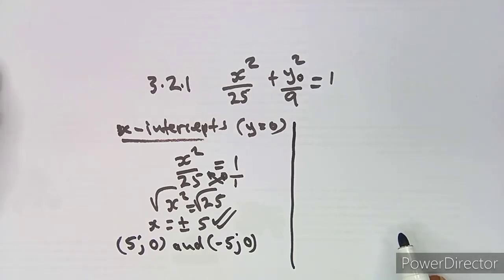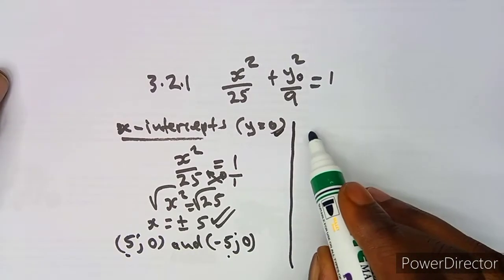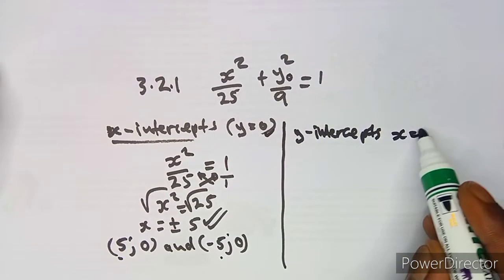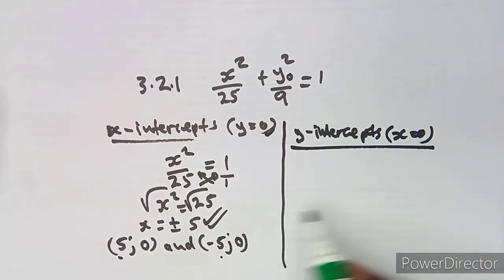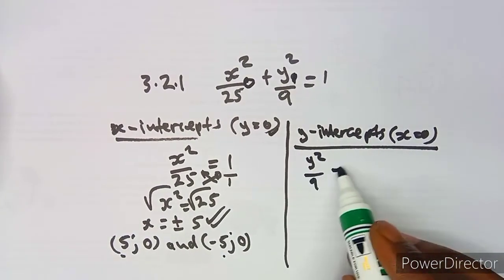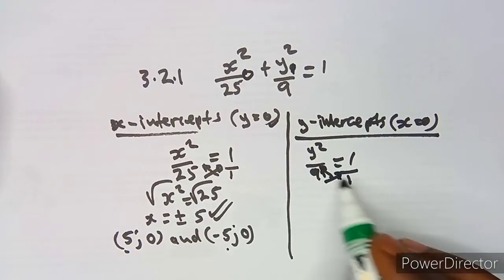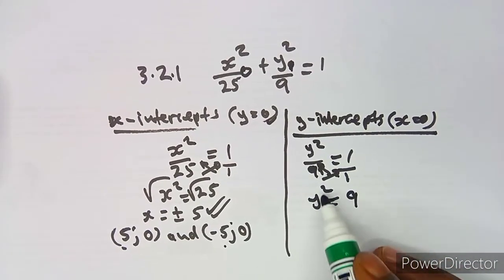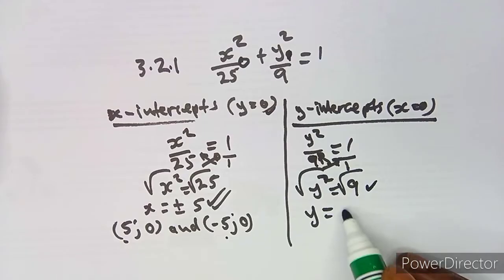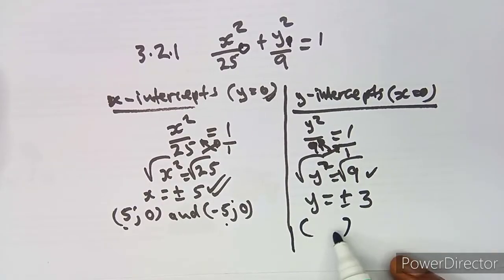The value of y is the same for different values of x. For the y-intercepts, x equals zero, so we remain with y squared over 9 equal to 1. Cross-multiplying gives y squared equal to 9. Taking the square root, y equals the square root of 9, which is 3, but the square root gives plus or minus 3.